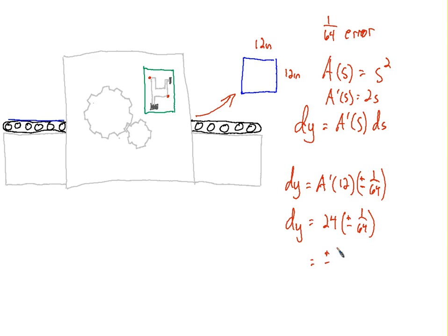So we have plus or minus 24 over 64, and that is 3/8. So 3/8 inches squared. The area could be off by more or less 3/8 of an inch squared. So that's something that the guy who's in charge of keeping the customer happy would be able to tell them approximately.